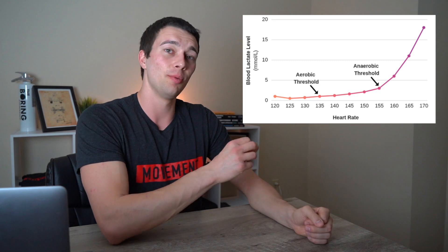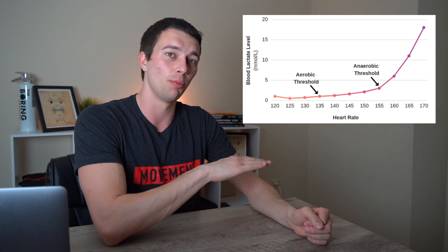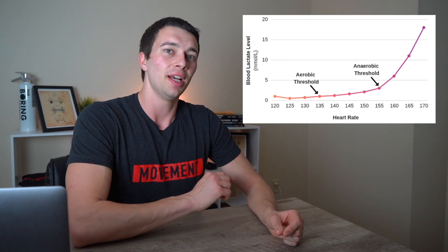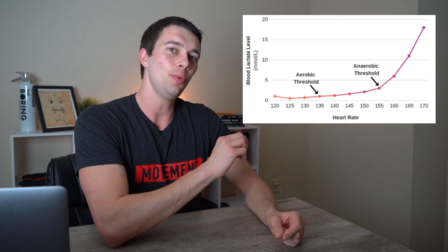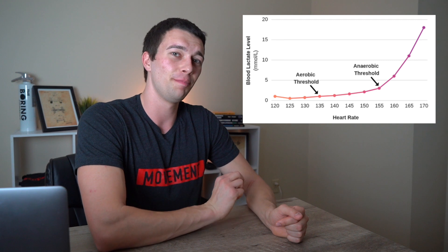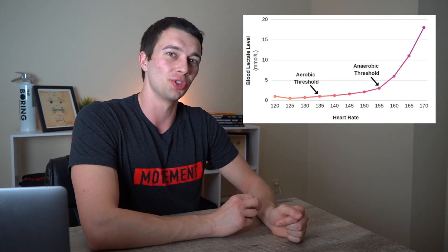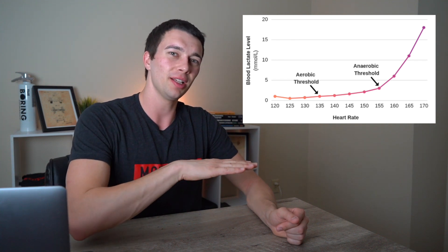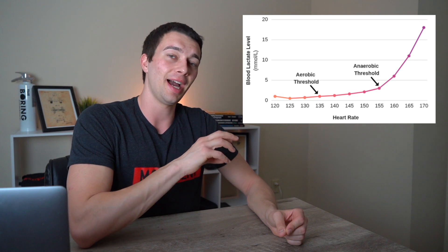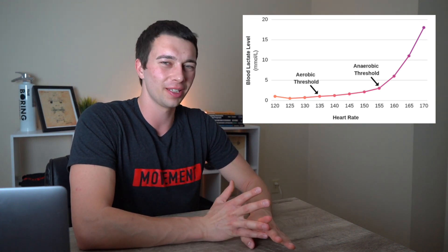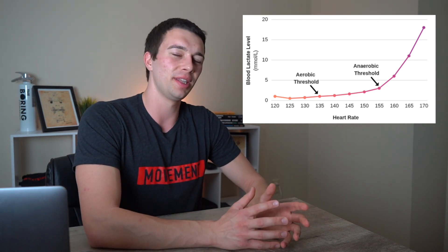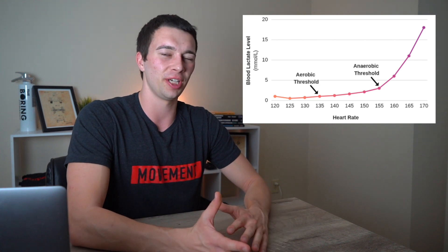On the graph, lactate slowly increases from one millimolar to two to three millimolar until we hit a certain point where the graph spikes up. For this athlete, that's right around 155 beats per minute — the spike in lactate concentration. That change in slope from a relatively low slope to a steep slope is the lactate threshold. You may have heard of anaerobic threshold or ventilatory threshold; technically these can be slightly different, but for the most part they're within a few beats per minute and can be used interchangeably practically speaking.